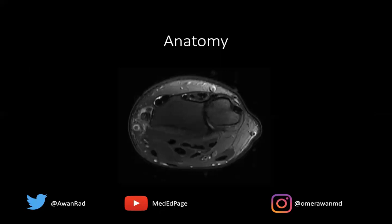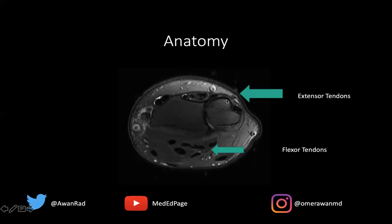I want to talk a little bit about anatomy, because wrist anatomy is confusing. On the axial T2 fat-sat image, we have the radius, Lister's tubercle, and the ulna. The tendons anteriorly or volarly are all the flexor tendons — many within the carpal tunnel. The dark structures on the dorsal aspect are the extensor tendons, and there are six extensor compartments: compartment one is the abductor pollicis longus and extensor pollicis brevis; compartment two is the extensor carpi radialis longus and brevis; compartment three is the extensor pollicis longus; compartment four is the extensor indicis and extensor digitorum; compartment five is the extensor digiti minimi; and compartment six is the extensor carpi ulnaris.